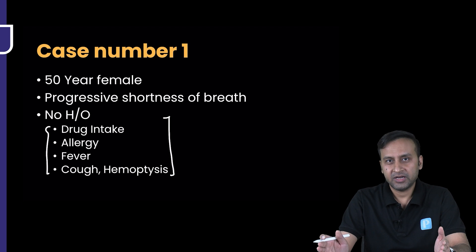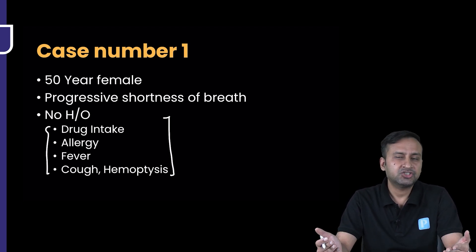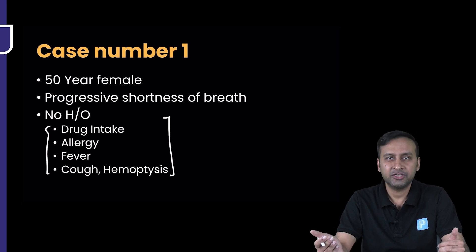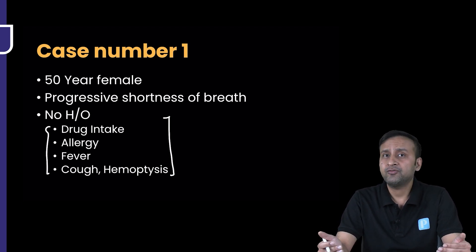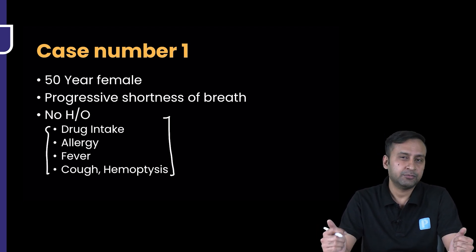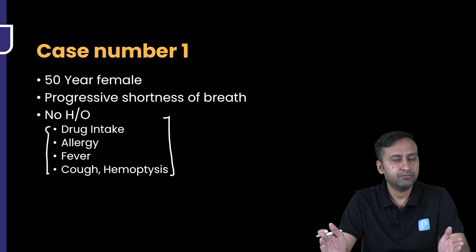Whenever we talk about interstitial lung diseases, there are only a few ways in which the lung reacts to different diseases — it can have ground glass opacities, nodules, or reticulations that we've already discussed. But trying to find out the underlying cause or exact diagnosis is very difficult and it is dependent only upon the clinical picture of this patient. So in this case, not only radiological knowledge but also clinical knowledge is important.